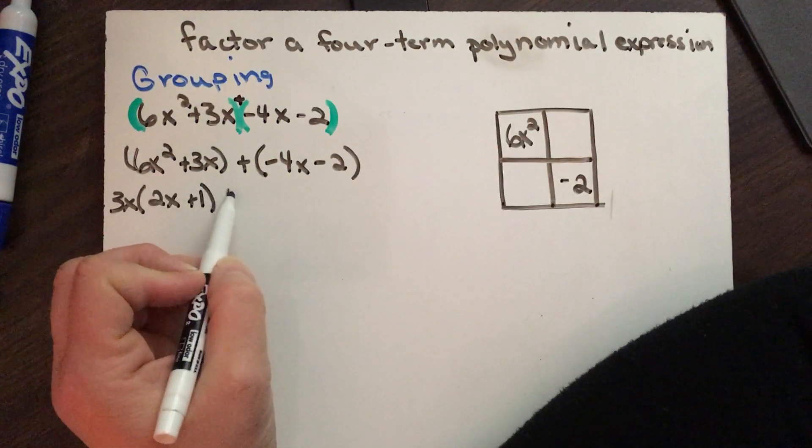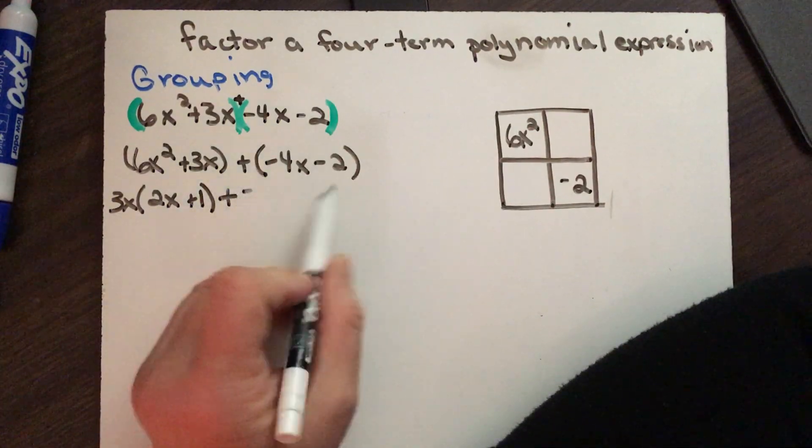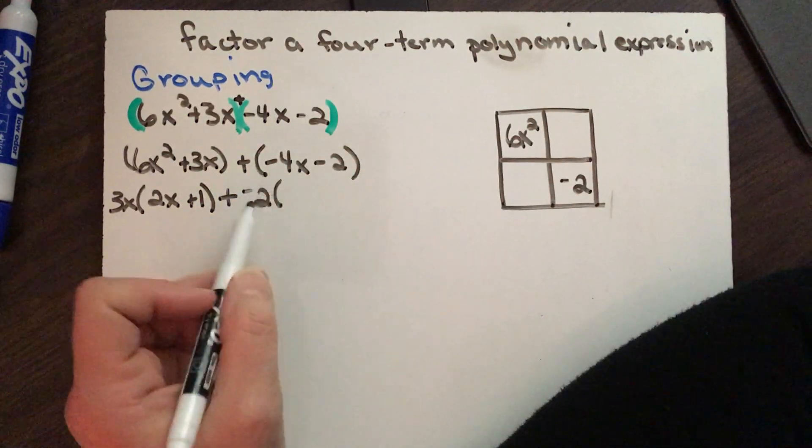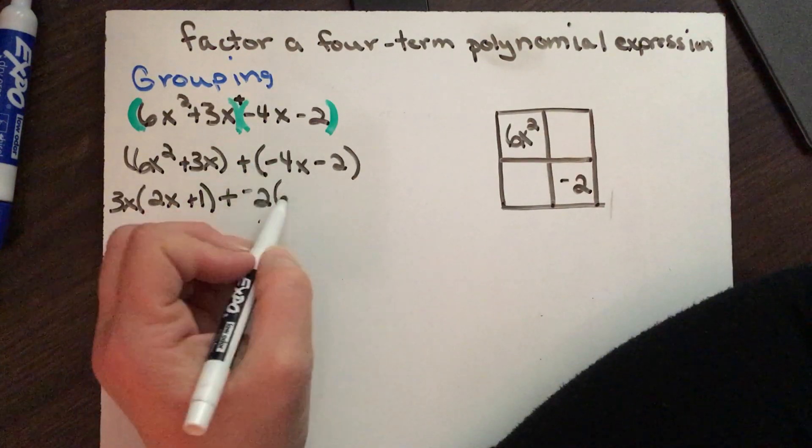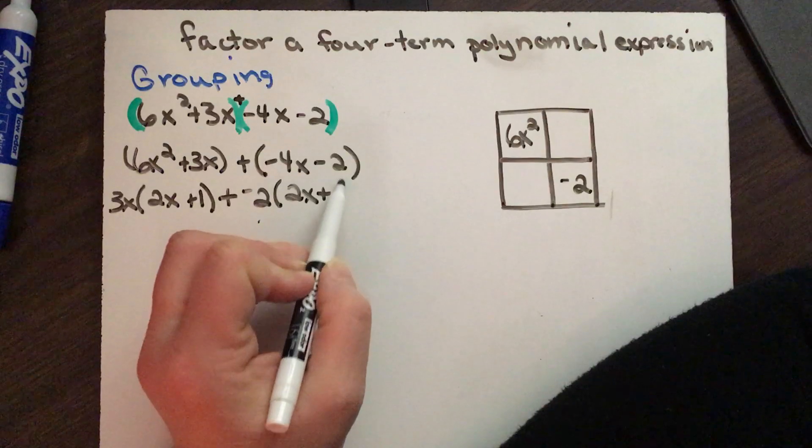Now I'm going to come over here, so I'm going to take out the negative and they both share a 2, so that leaves me with: this divided by a negative 2 is 2x, this divided by a negative 2 is a positive 1.